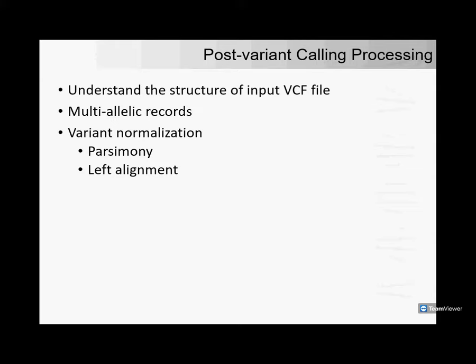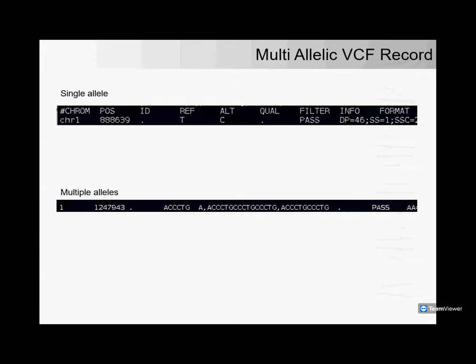Once the merged VCF files are available, they go through post-variant calling processing — including very important steps to ensure the VCF structure is valid, handling multiallelic records, and performing variant normalization. A typical variant is represented in a VCF file with: chromosome context, genomic position, reference allele, alternate allele, and additional metadata supporting the call. Multiallelic records represent all possible alterations seen at a locus — the same reference allele but multiple alternate alleles (deletions or insertions) separated by commas.